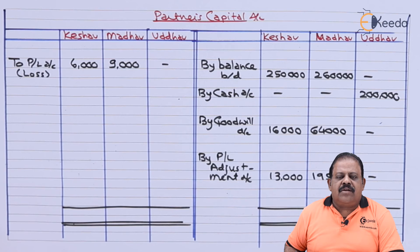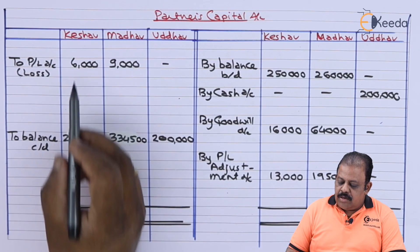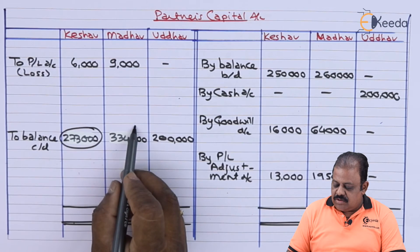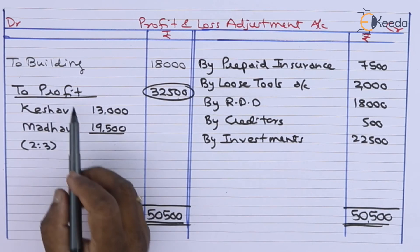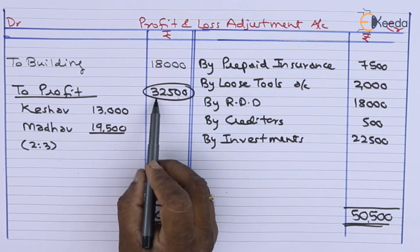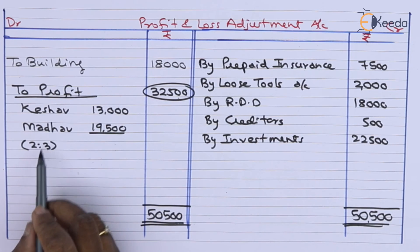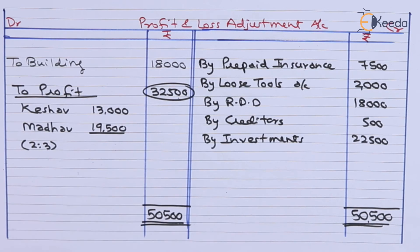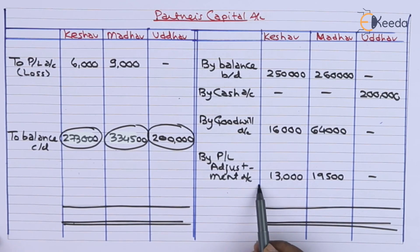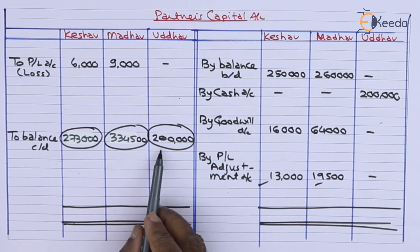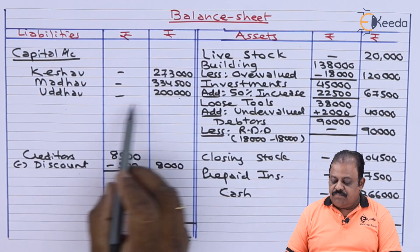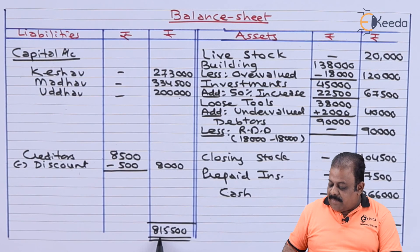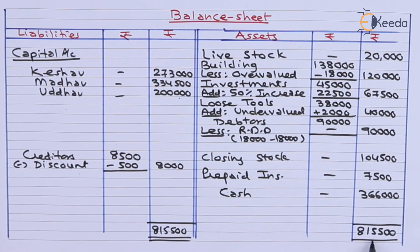The profit has been transferred to partners' capital accounts on the credit side. Closing the capital accounts: Keshav's balance is 2 lakh 73,000, Madhav's balance is 3 lakh 34,500, and Uddo's is 2 lakhs. The cash account closing balance is 2 lakh 66,000. Closing balances of capitals are transferred to the balance sheet on the liability side. The total of the balance sheet is 8,15,500.